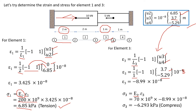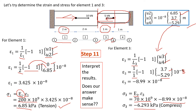From strain 3, we calculate stress for element 3 using Hooke's Law, but now we use the modulus of elasticity for element 3. Element 3 is made from aluminium, so E3 is 70 gigapascal. Multiplying by strain 3 (negative 8.99 times 10⁻⁸), we obtain a negative stress, meaning element 3 is in compression. Looking at element 3 — it has a constraint at one end and a load applied — of course it will be compressed. Our answer is logical.